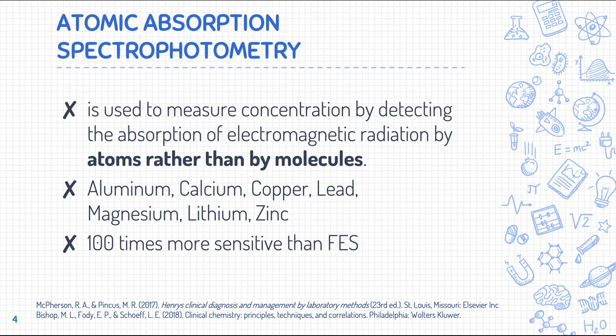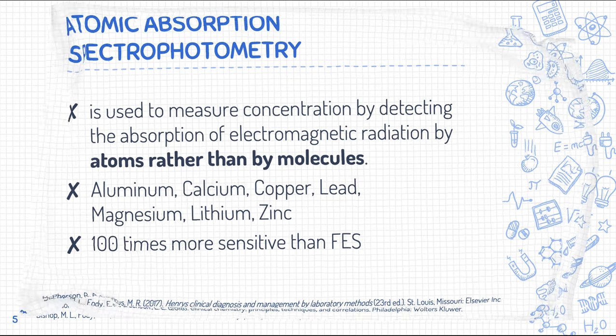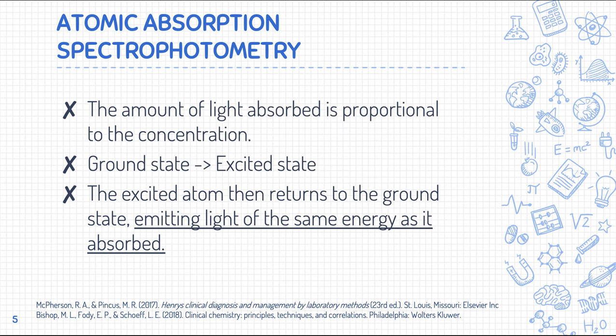AAS is 100 times more sensitive than FES — flame emission spectrometry. FES is a very insensitive and non-specific method, which is why we use AAS more than FES. When it comes to determining concentration using AAS, the amount of light absorbed is directly proportional to the concentration of your analyte — very much similar to spectrophotometry.